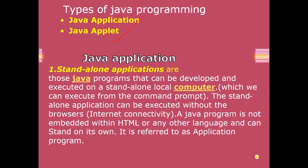For example, when you download some games or videos from the Play Store, that is an example of a standalone application because it does not need any browser to run. A Java program is not embedded with HTML or any other language — it is standalone on its own, and is referred to as an application program.